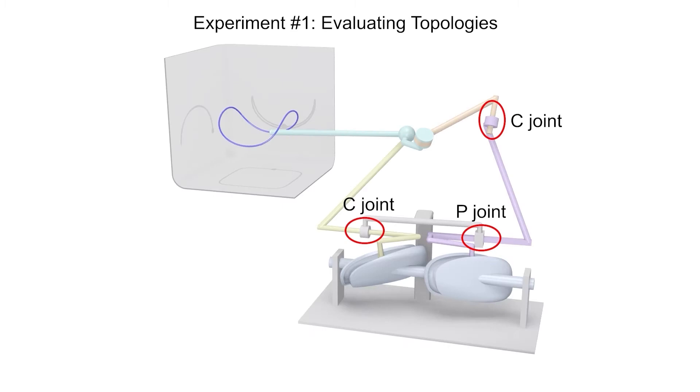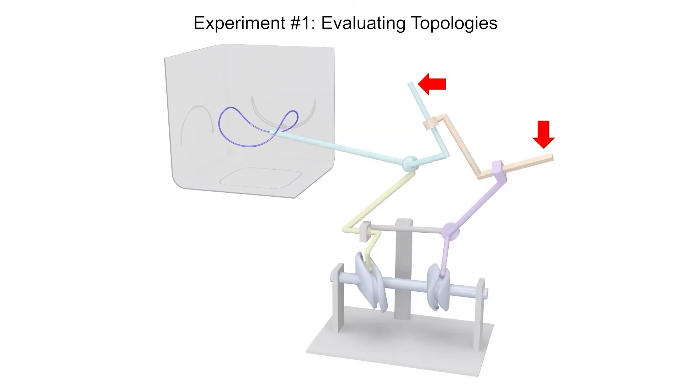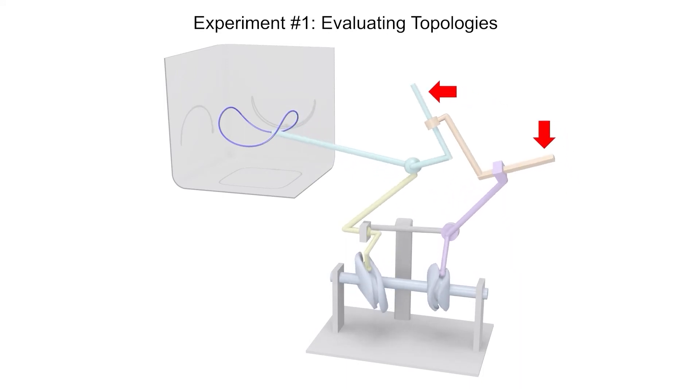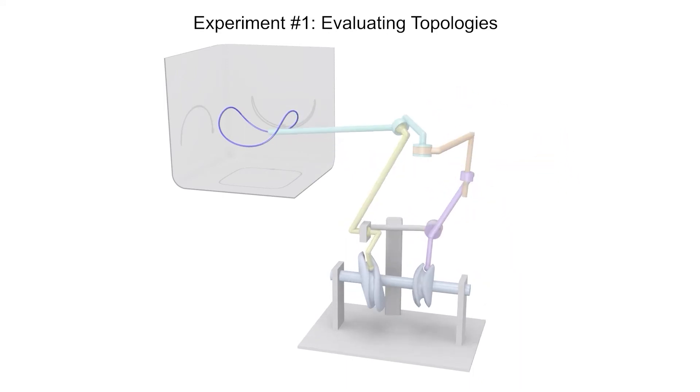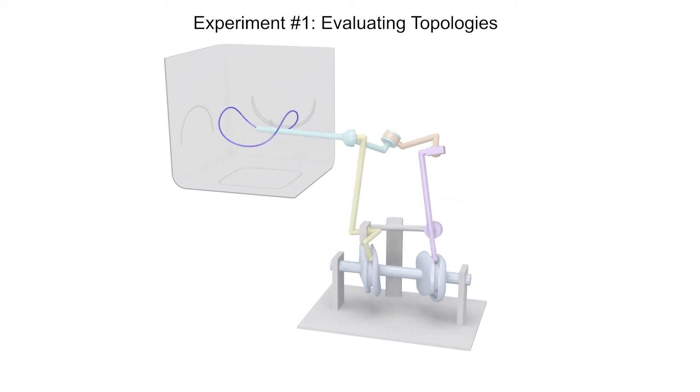We find that the translational motion allowed by P or C joints makes the link with L-like shape, significantly increasing the linkage's motion envelope and making the mechanism less usable. Hence, we prefer to use 3D cam linkage mechanisms without P or C joints in this paper.